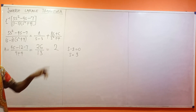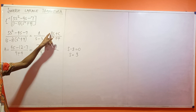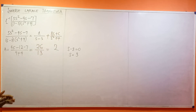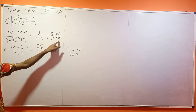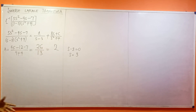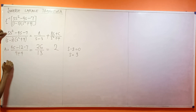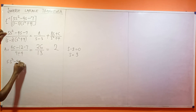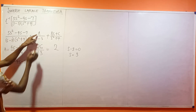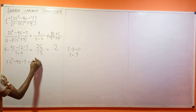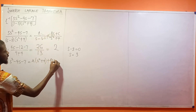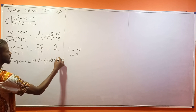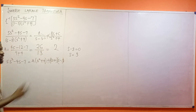The next thing is I have to find B and C. To get B and C, you cannot use the cover-up rule anymore because you can't make (s² plus 4) equal to 0 and get a real value for s. So instead, the numerator 5s² minus 4s minus 7 equals A(s² plus 4) plus (Bs plus C)(s minus 3). That's what I'm going to be working with.